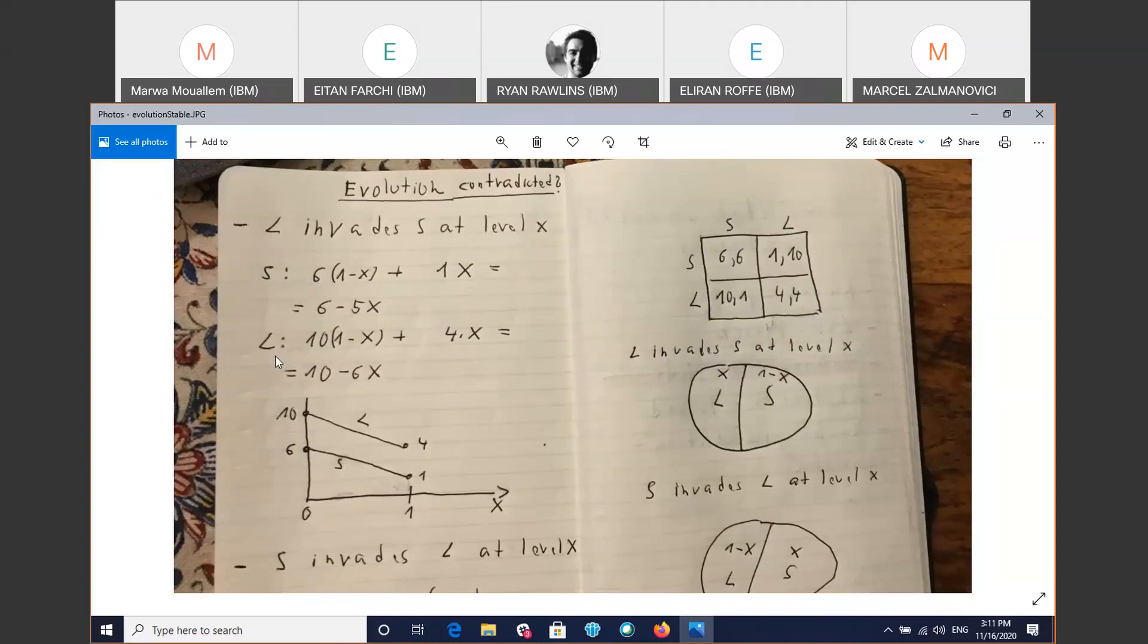Okay. Now what is L going to be doing? So with probability 1 minus X, L is going to meet a small. So we're going to have SL, and L is going to get 10. And with probability X, L is going to meet an L, and it's going to get 4. So overall, it's going to get 10 minus 6X. Okay. Now 10 minus 6X is this line, which is consistently bigger than this line. Okay.